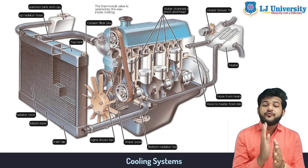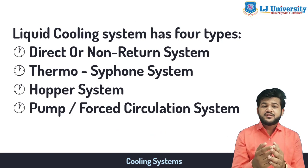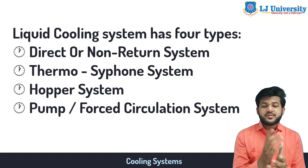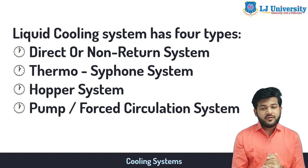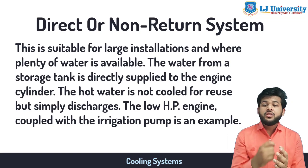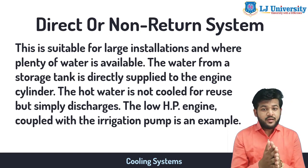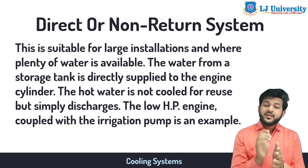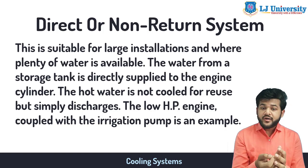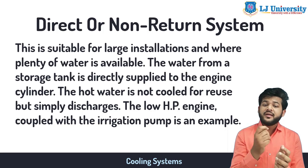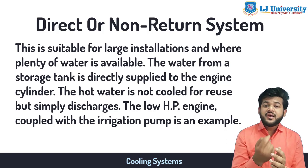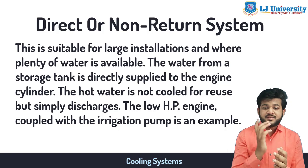This cooling system has basically four types: first, the direct or non-return system; second, the thermosiphon system; third, the hopper system; and fourth, the pump circulation or force circulation system. The direct or non-return water cooling system is very suitable for large installations where plenty of water is available. Water from a storage tank is directly supplied to the engine, and the hot water is not cooled for reuse but is simply discharged. A low-horsepower engine coupled with an irrigation pump is an example.